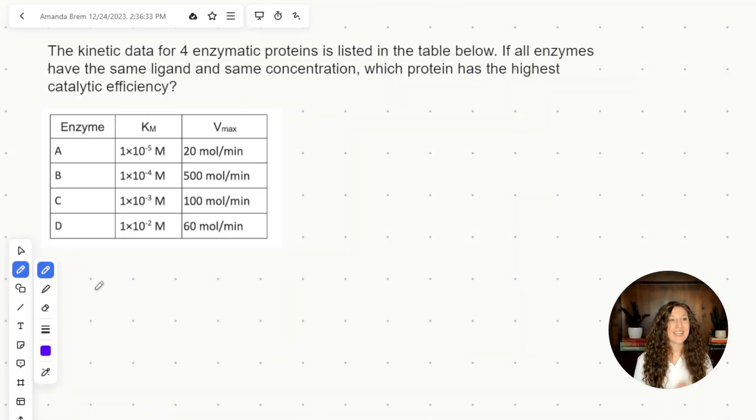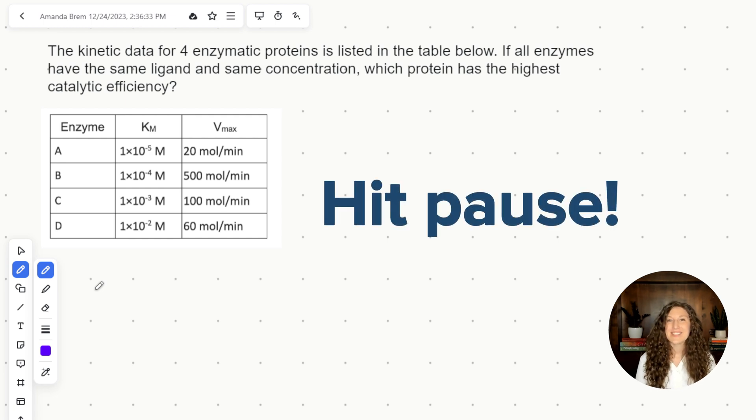This question shows you the kinetic data for four enzymatic proteins in a table, and they're asking you if they all have the same ligand and concentration, which protein has the highest catalytic efficiency. So go ahead, pause this video, try it on your own, and then we'll walk through it together.